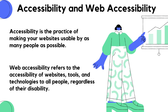Web accessibility refers to the accessibility of websites, tools, and technologies to all people regardless of their disability or impairment. Web applications must support people with types of disabilities such as vision, physical, cognitive, literacy, and hearing.